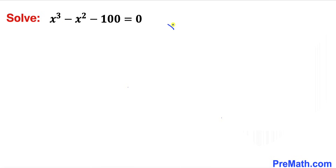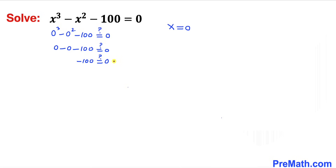Let's try x = 0 and see if this is our solution. Wherever we see x we replace it by 0, so this becomes 0³ - 0² - 100. Is the left hand side equal to the right hand side? We get -100 = 0, which is a false statement. So x = 0 is not our solution.